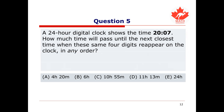For our fifth question, let's do another question on 24-hour time. A 24-hour digital clock shows the time 20:07. How much time will pass until the next closest time when these same four digits reappear on the clock, in any order? Pause this video and try working it out yourself, and when you're ready, keep watching to see how it's done.